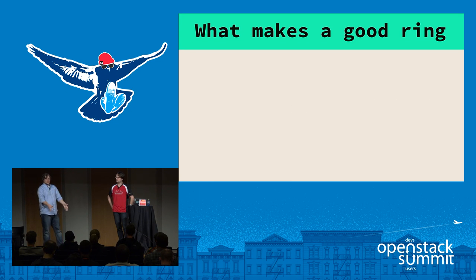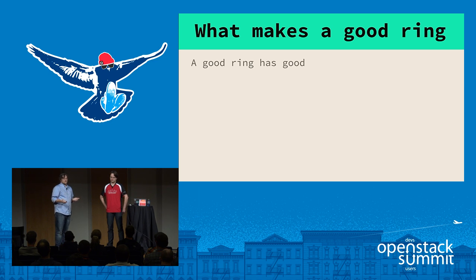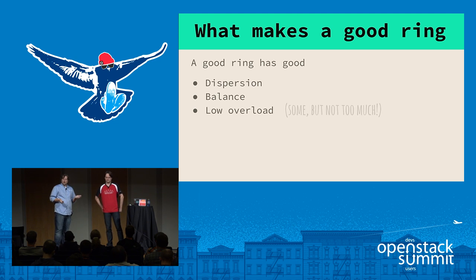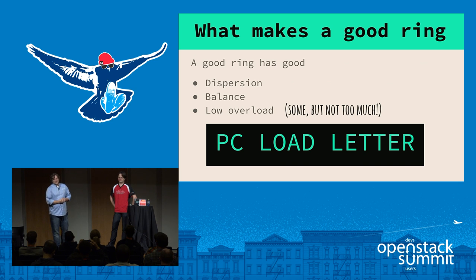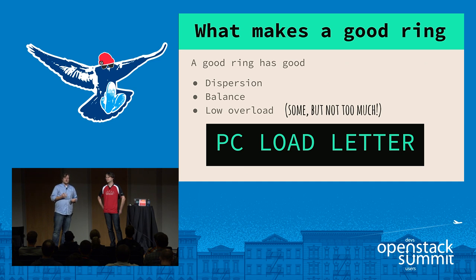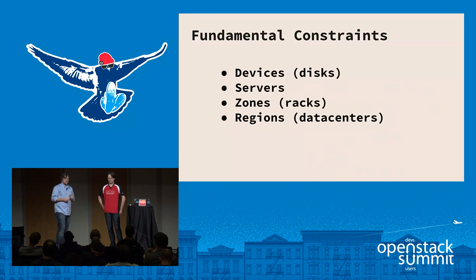Now we know how a ring provides Swift with data locations. But if it's just a consistent hashing algorithm tracking multiple replicas, why can't we just write any devices into the table? Over the years we've learned there are properties that make one ring good and one ring bad. A good ring has good dispersion, good balance, and low overload. Rings aren't simply good or bad — they fill a spectrum of gray, and there are trade-offs whenever you're assigning partitions across your cluster's failure domains.